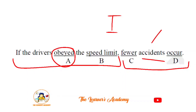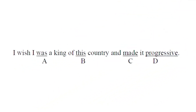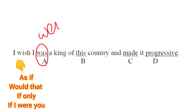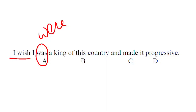Sentence two: 'I wish I was a king of this country and made it progressive.' The error is in option A — 'was' should be 'were.' In unreal past constructions after phrases like 'I wish,' 'if only,' and 'suppose,' we always use 'were' regardless of subject — I, you, he, she, we. So the correct sentence is: 'I wish I were a king of this country and made it progressive.'